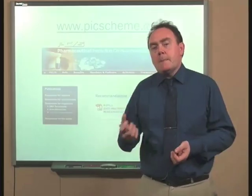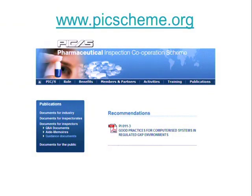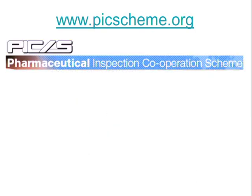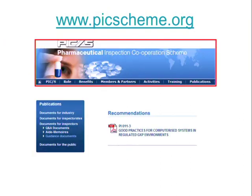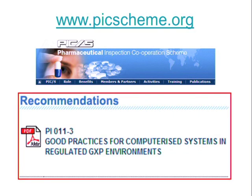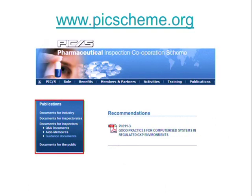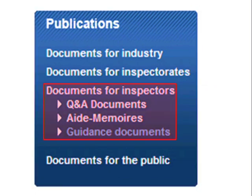One of the references in the ISPE's GAMP 5 document comes from the PICS organization. PICS — P-I-C-S — stands for Pharmaceutical Inspection Cooperation Scheme. They have a recommended guideline called Good Practices for Computerised Systems in Regulated GXP Environments. Interestingly, this document is aimed at inspectors — those who will be auditing our facilities and assessing our computerised systems for regulatory compliance based on that guidance.